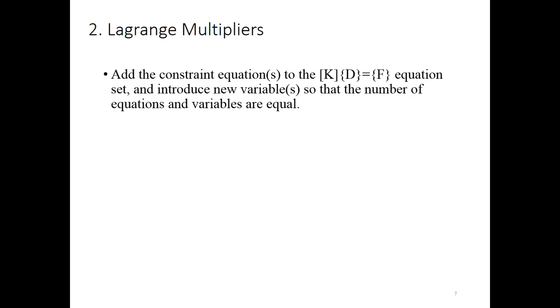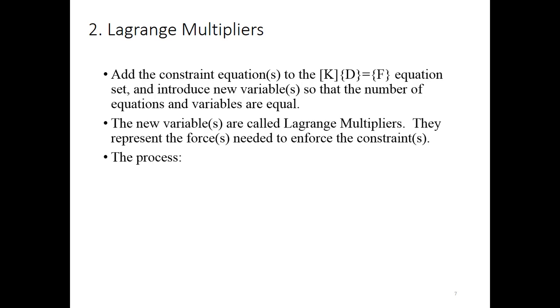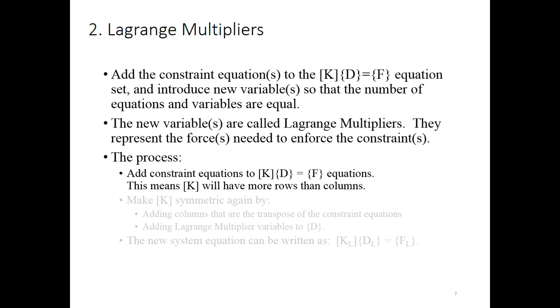Second method I'll talk about is the Lagrange multipliers approach. The basic idea here is that we're going to increase the number of equations, but also then increase the number of variables. So we're going to expand the KD equals F equation. The new variables are going to be called Lagrange multipliers, and they represent the forces that are required to enforce the constraints. So the process is we're going to add the new constraint equations to KD equals F. That's going to give us a K that has more rows than columns. But then we're going to make K symmetric again by adding columns that are transposed of the constraint equation rows. In other words, we're going to get a symmetric matrix again. Then we're going to add the Lagrange multiplier variables to the degree of freedom vector, and we get a new system equation, which is KL times DL equals FL.